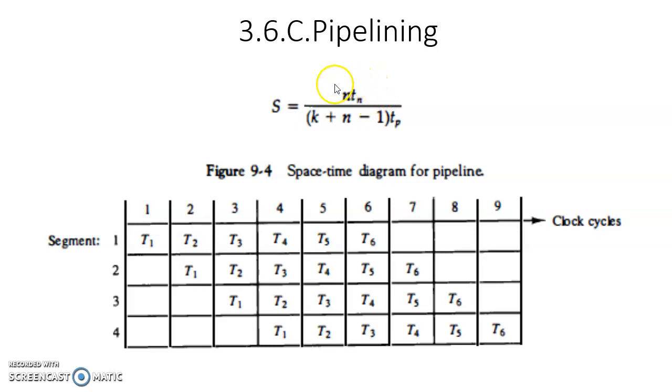In the numerator, it is given the time taken by the non-pipeline method: n * tn, where n equals 7 here, and tn is the time taken for a single bit to pass through three segments, that is equal to 3. So 7 * 3 equals 21.